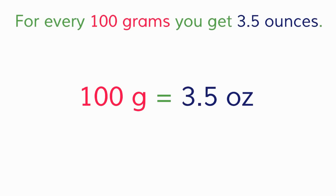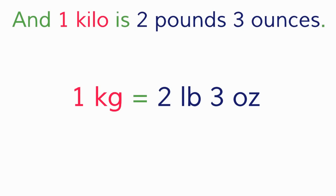For every hundred grams, you get three and a half ounces. And one kilo is two pounds, three ounces, and just a little bit.